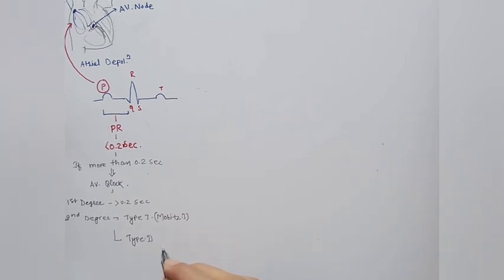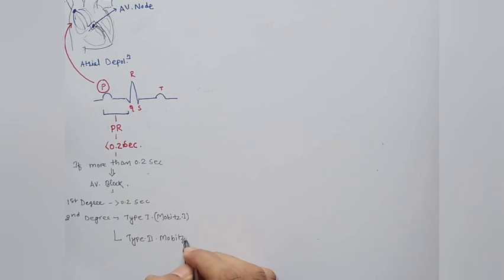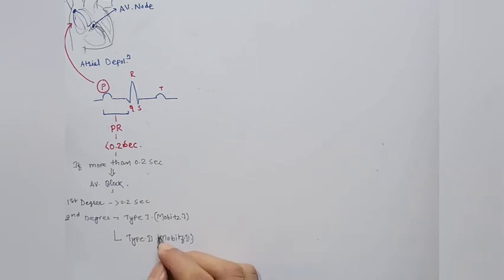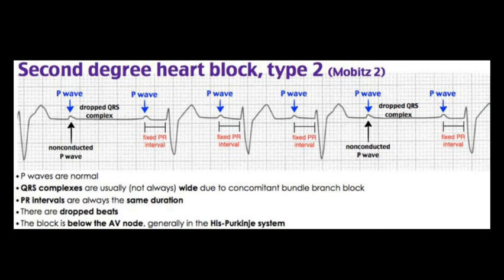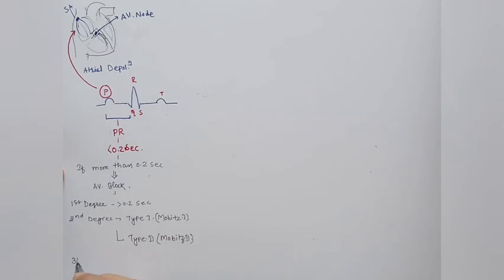After that we have Type 2 heart block — Mobitz Type 2. It is similar to first degree heart block except there is a drop of the QRS complex, and this dropped beat is characteristic of second degree heart block.